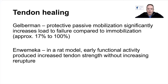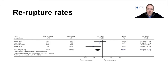Work from the 1970s showed that protective passive mobilization significantly increased load to failure compared to immobilization. We knew this for flexor tendons in the hands 40 to 50 years ago. However, it's only really been the last ten years with Achilles tendons that we've moved from treating everyone in a cast in a flexed position to a much more active rehabilitation.